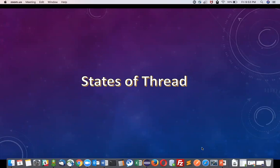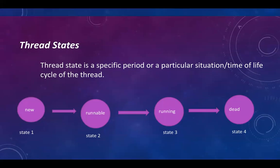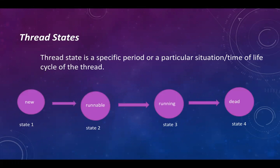Welcome to a new part of multithreading. Today we are going to learn what are the different states of a thread. Thread state is a specific period or particular situation or time in the life cycle of a thread. As you can see here in the diagram, a new thread is created, a thread is in the runnable state, running state, and so on — there are different types of periods or situations in the life cycle of a thread that are called thread states.